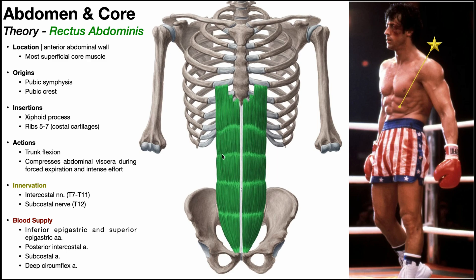The linea alba runs inferiorly from the pubic symphysis and travels vertically all the way up to the xiphoid process. The origins of the rectus abdominis are more inferior — the muscle originates partly off of the pubic symphysis and also laterally off of the pubic crests, which are the same origins as the pyramidalis. The rectus abdominis inserts on the xiphoid process and on the costal cartilages of ribs 5, 6, and 7.